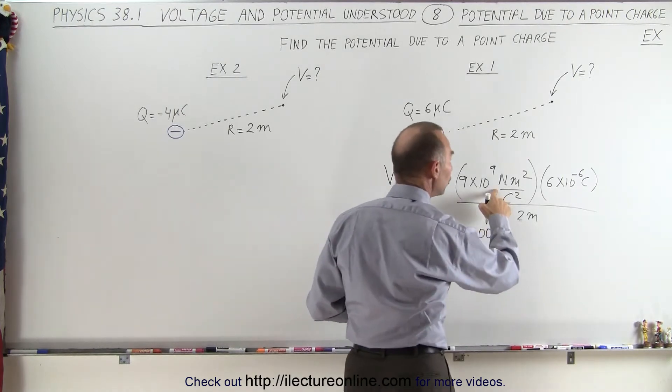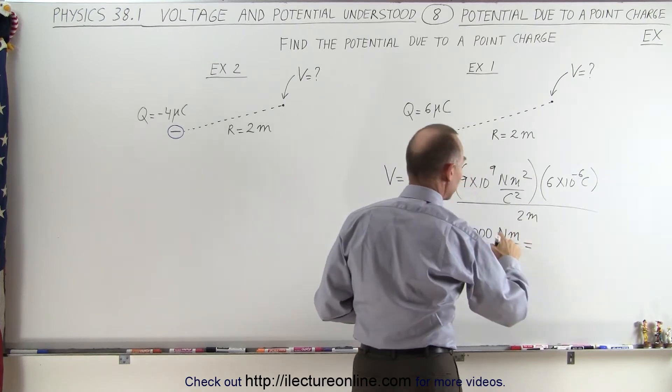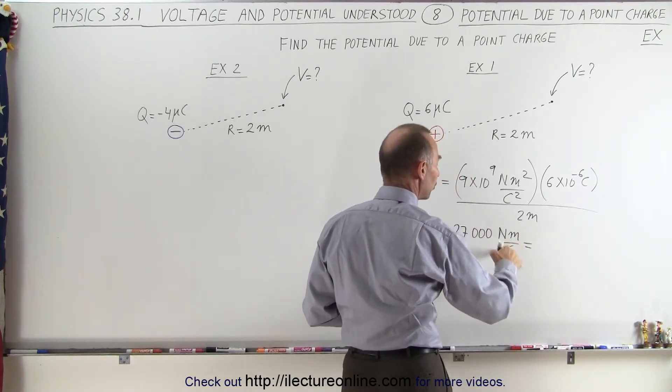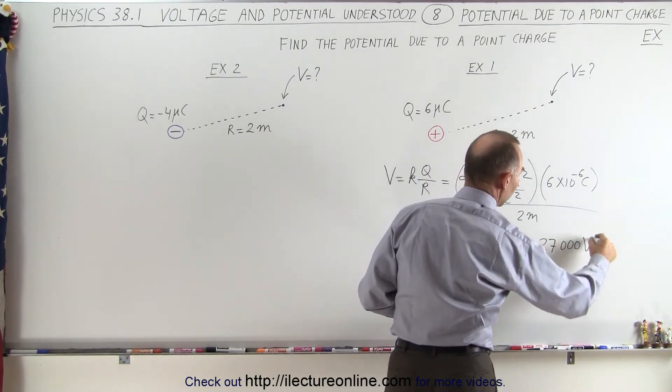The units will be newton meters per coulomb, and we know that newton meters is joules, so joules per coulomb, which is volts, so this becomes 27,000 volts.